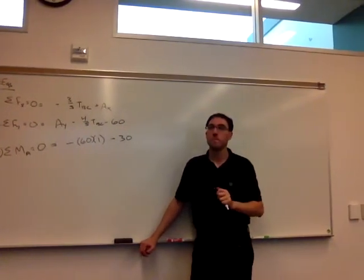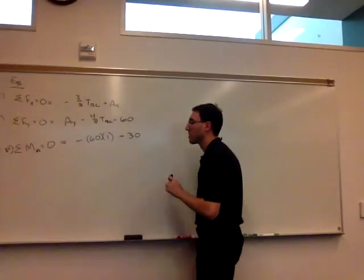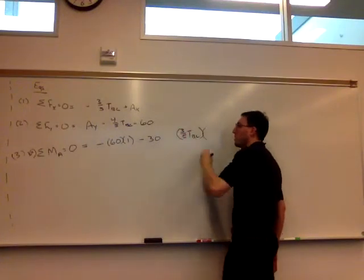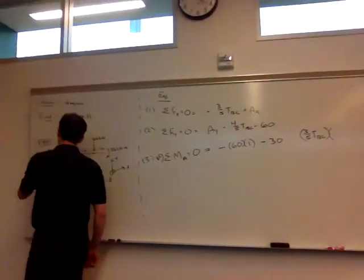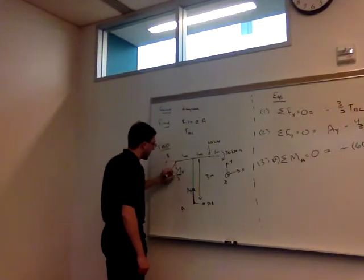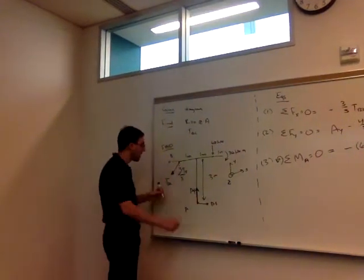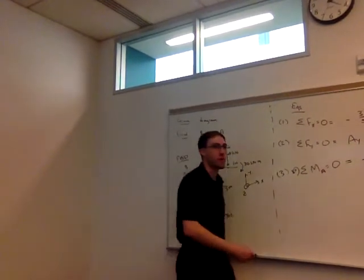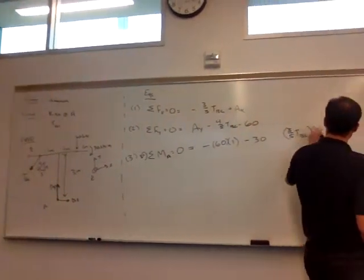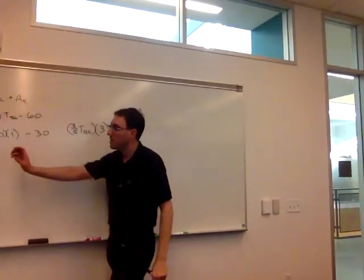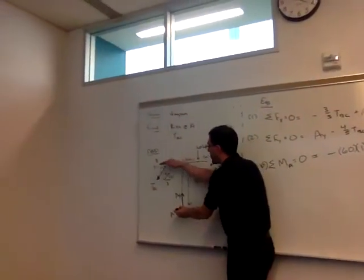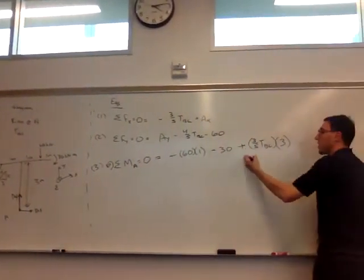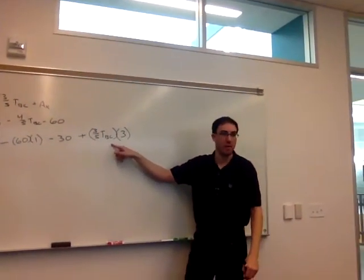So the 3/5 TBC is going to be the horizontal component of this. We want to break this up just like we did in Chapter 4. So the 3/5 is horizontal, its perpendicular distance to A is going to be 3. And is it clockwise or counterclockwise? Around A, if we pushed it in that direction, the whole structure would want to rotate counterclockwise, so this component causes a positive moment around A.